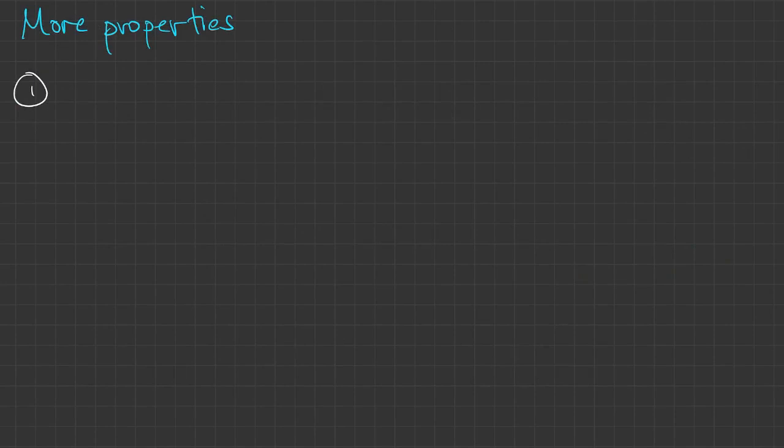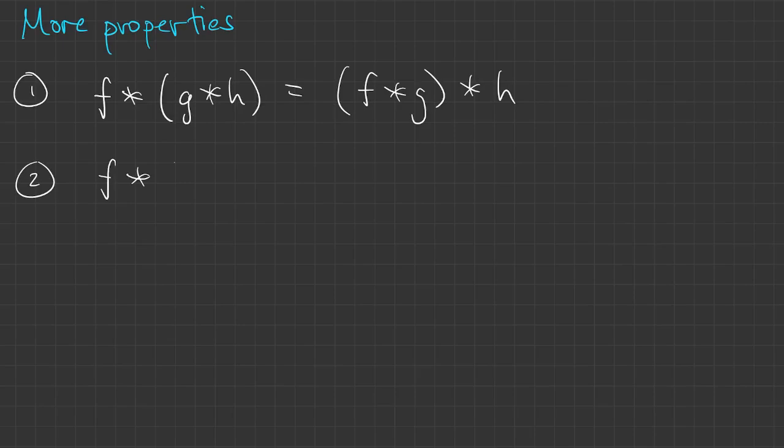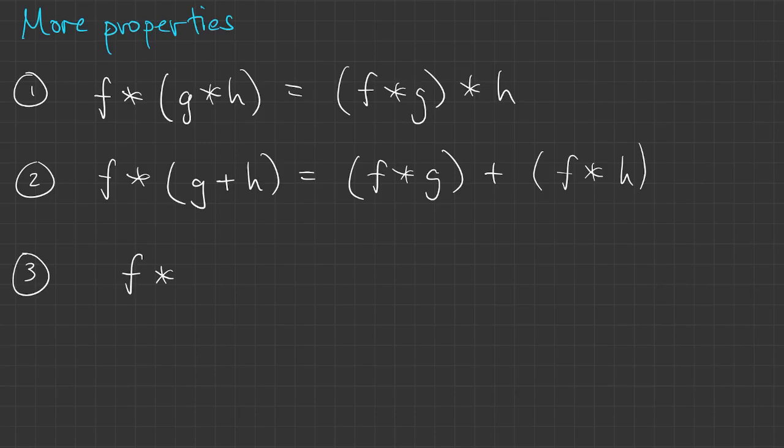There's some other properties you can prove from the definition. Convolution is also associative. Second, convolution is distributive. Third, f convolved with the zero function is the zero function. And finally, there's one that's a little bit different. f convolved with the delta function equals f. So the delta function acts like a multiplicative identity.